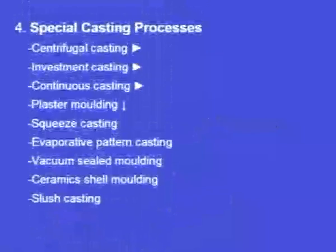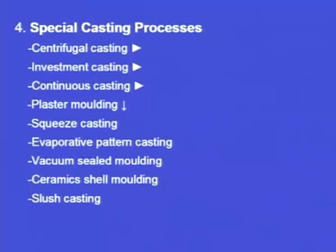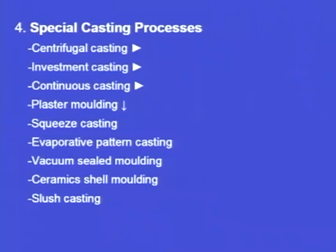The fourth classification of the casting process is the special casting process. There are mainly nine types: centrifugal casting, investment casting, continuous casting, plaster moulding, squeeze casting, evaporative pattern casting, vacuum shield moulding, ceramics shell moulding, and slush casting.